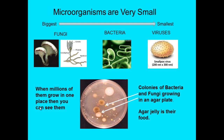Bacteria are a type of microorganism that require a couple of things in order to grow — usually a food source, moisture, and heat. They can grow in a number of different environments. One way to culture or grow bacteria is on what's known as an agar plate, which is shown here. The agar provides the bacteria with food so they can colonize and multiply.